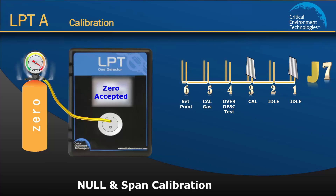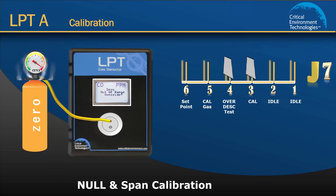If the zero level is not accepted, the message zero out of range override will appear. To override, move the other jumper resting on idle to the fourth position, override. This must be done within 30 seconds or the calibration process will be cancelled and the LPTA will return to normal operating mode.